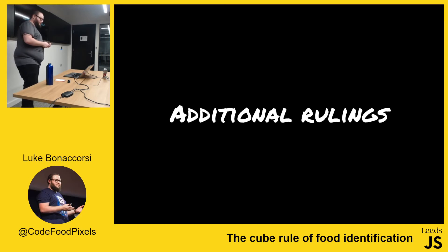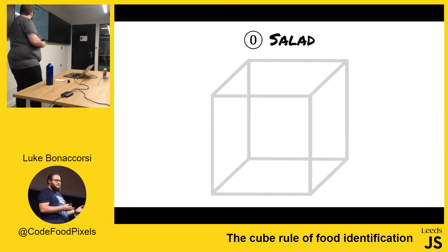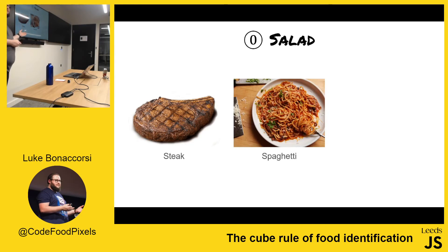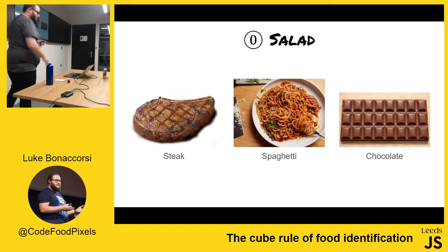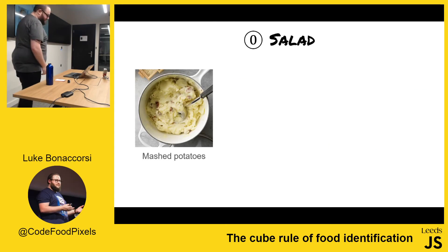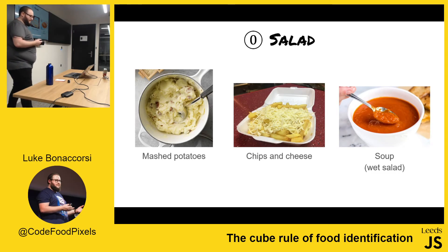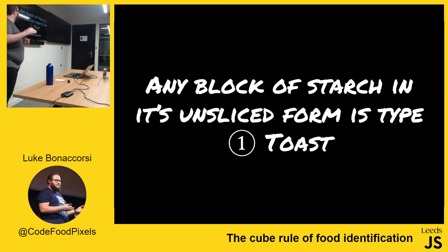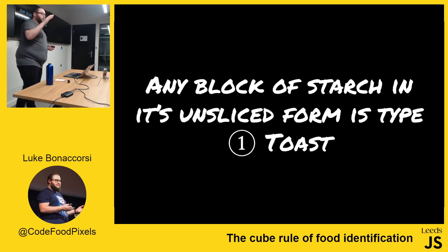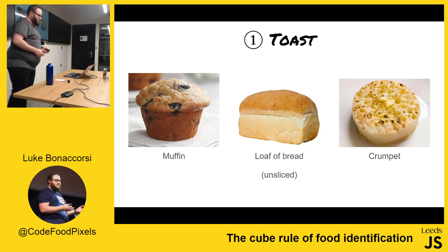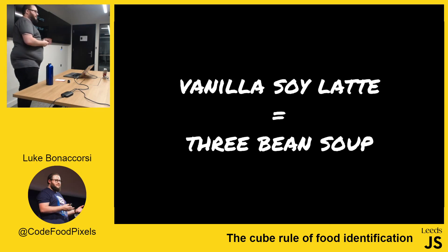There are some additional rulings. If there is no structural starch, it's a salad — which means steak is a salad. Spaghetti is a salad, because there's no structure to spaghetti, it's a blob. And chocolate is a salad, so you can be really healthy and have chocolate for lunch. Mashed potatoes, chips and cheese, and soup are a wet salad. Any block of starch that's not sliced is just toast — so muffins are toast, a whole loaf of bread is toast, and crumpets are toast. And finally, a vanilla soy latte is a three-bean soup, which means it's a three-bean wet salad.